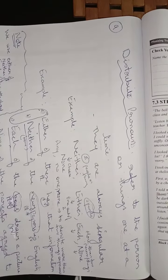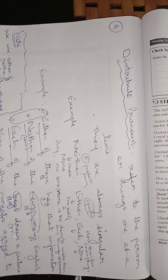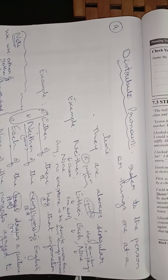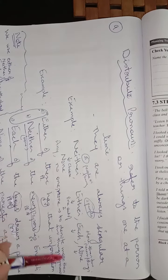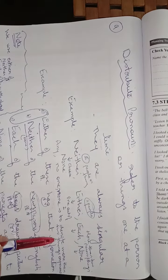So, distributive pronouns refer to the person or things one at a time. And they are always singular. These are the distributive pronouns which we use. Okay?